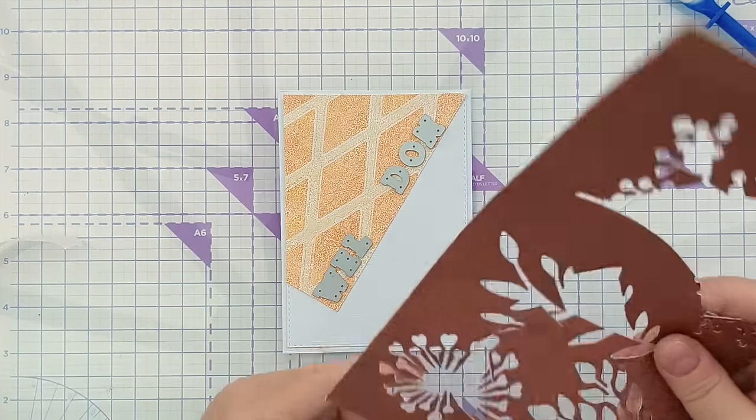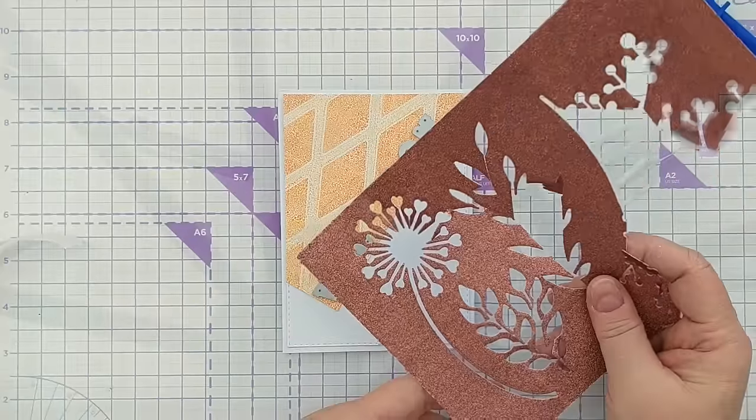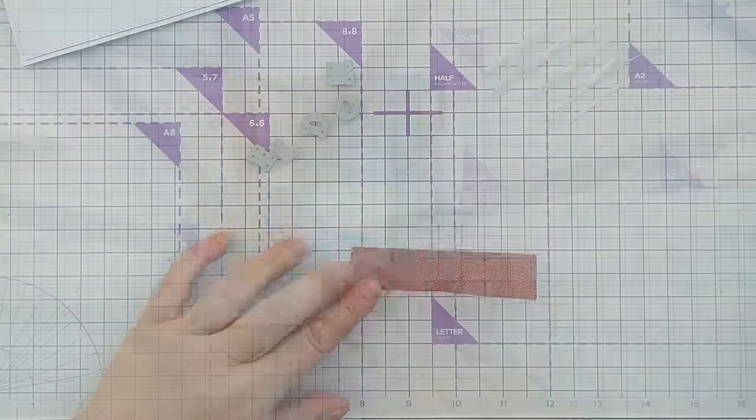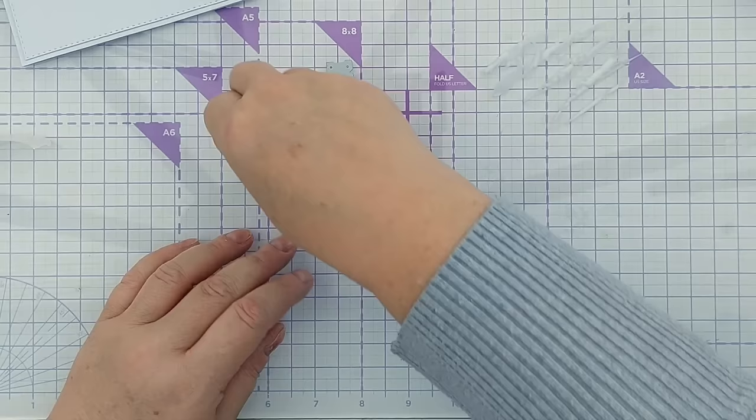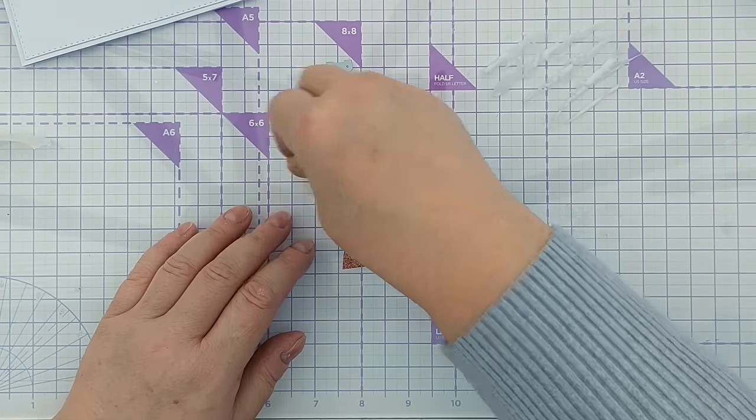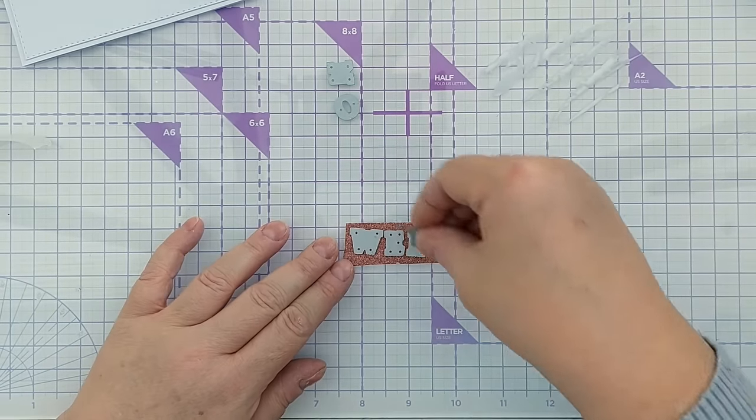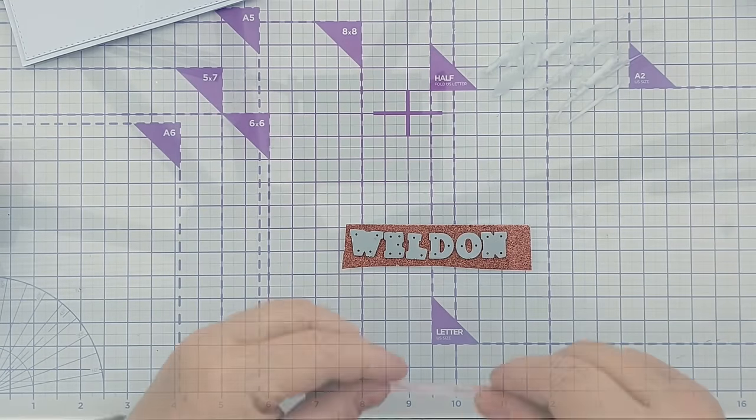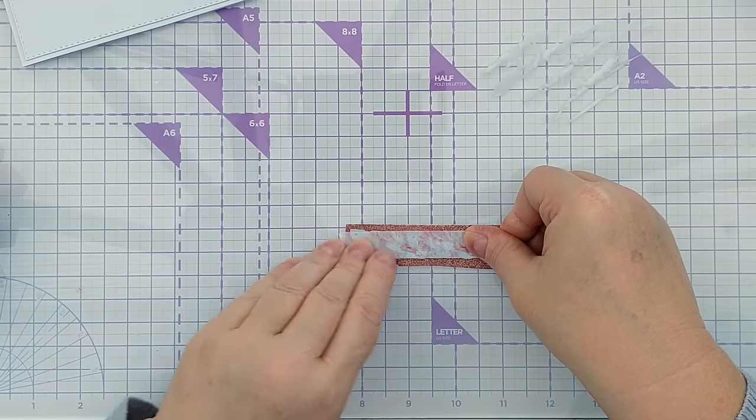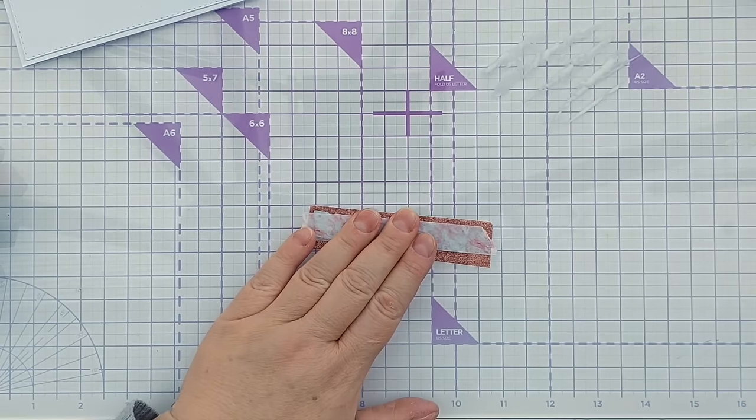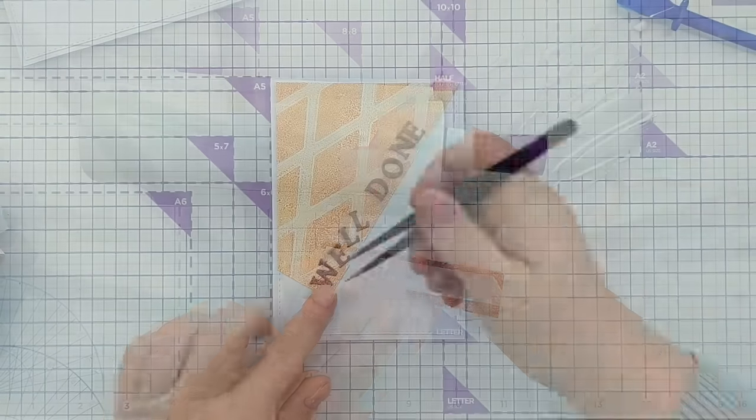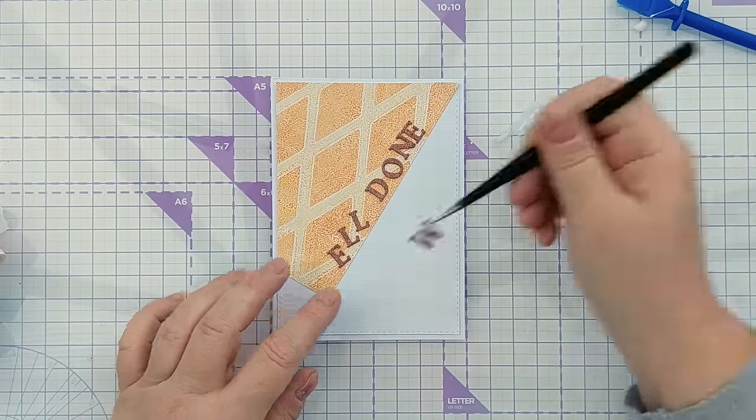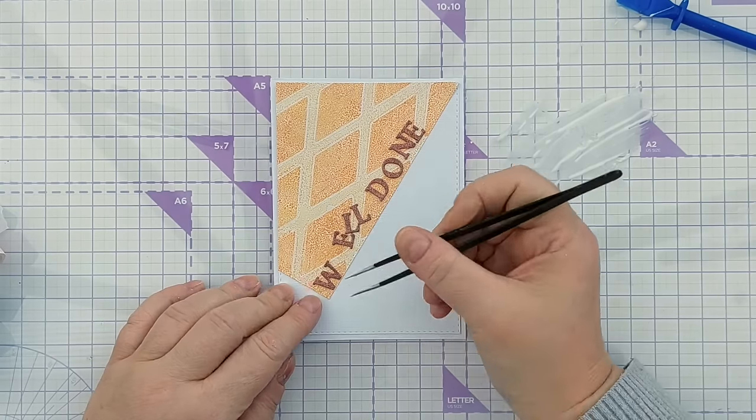For this card, I'm going to run the sentiment along that edge and it's going to say 'well done.' I'm going to cut it from this copper glitter cardstock. It's quite a thick cardstock, so I don't feel like it needs any foam underneath it. I need to cut an extra L and an extra E and add a little bit of washi just to keep these together so they don't wander around while I'm die cutting.